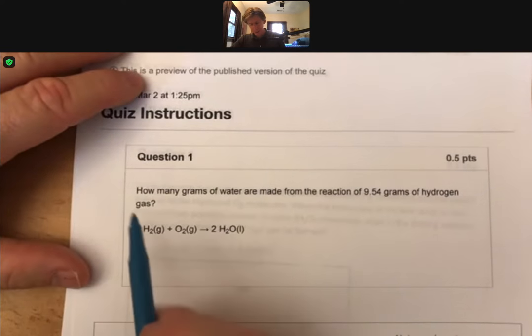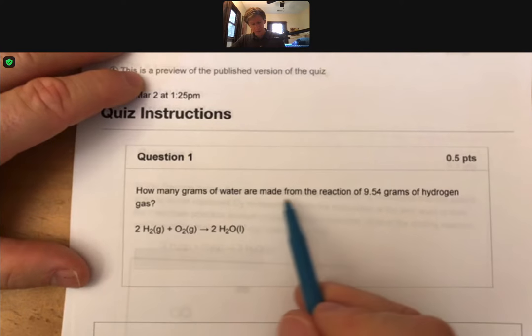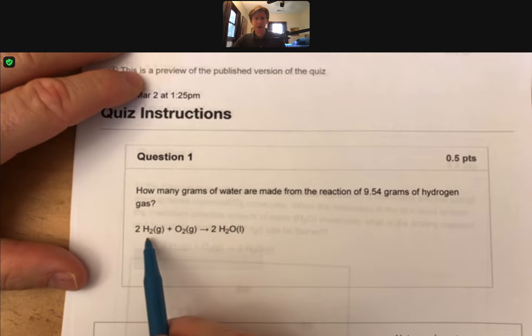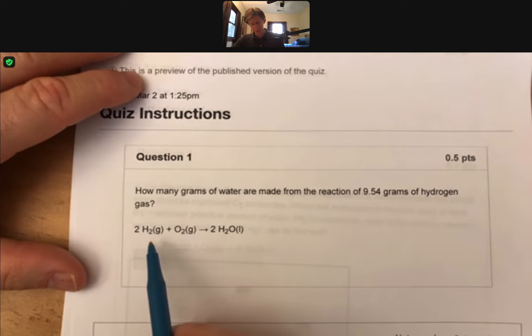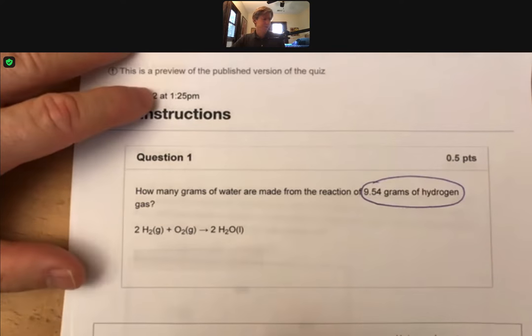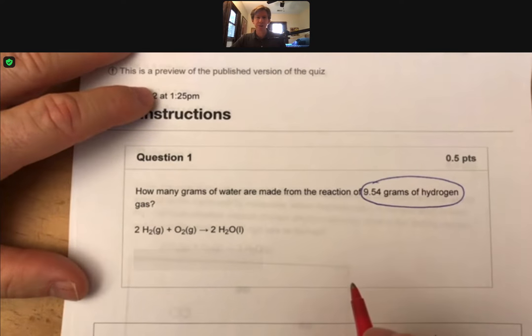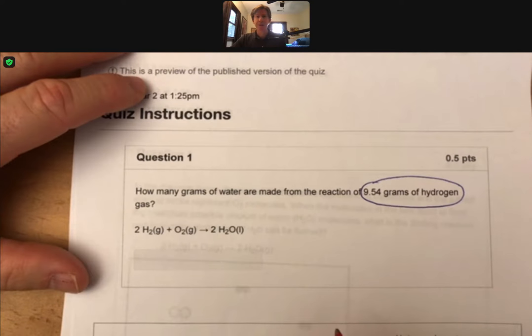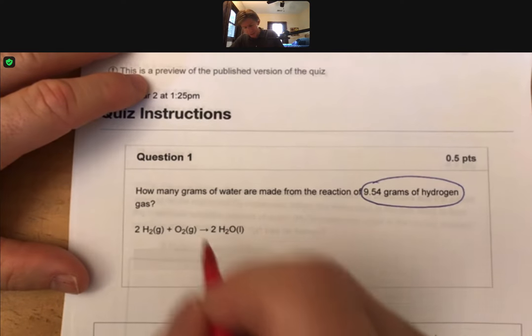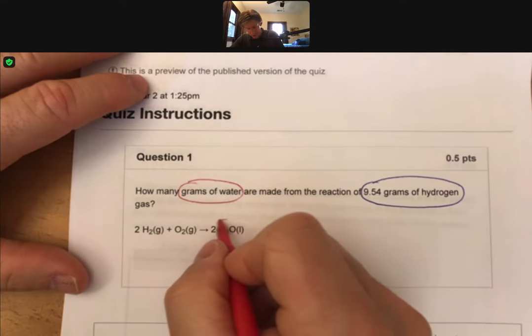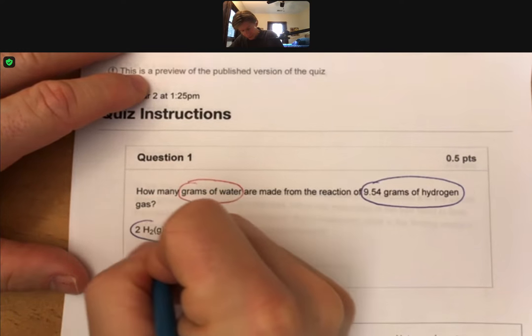Here's our question. It says, how many grams of water are made from the reaction of 9.54 grams of hydrogen gas, where hydrogen gas is going to be H2, as we've talked about before. And we're starting with our grams of hydrogen. And we're going to do stoichiometry, unit conversions, conversion factors. All these things are ways of saying the same thing. And we're going to end up with grams of water. And we can see that we've got our water over here and our hydrogen over here.